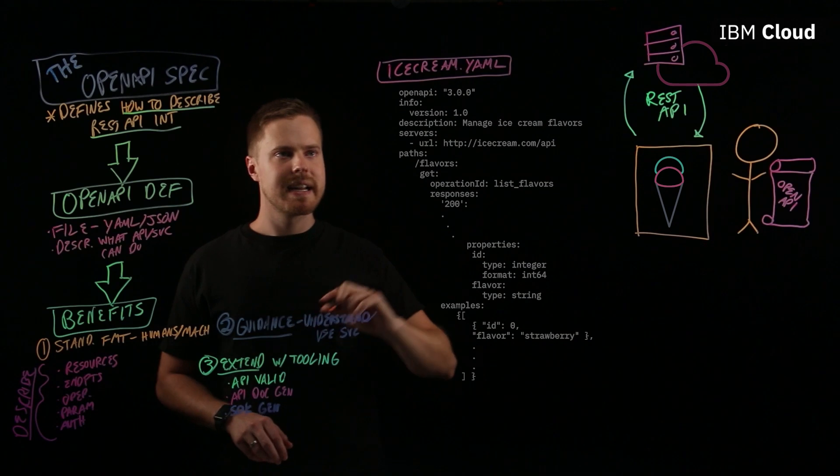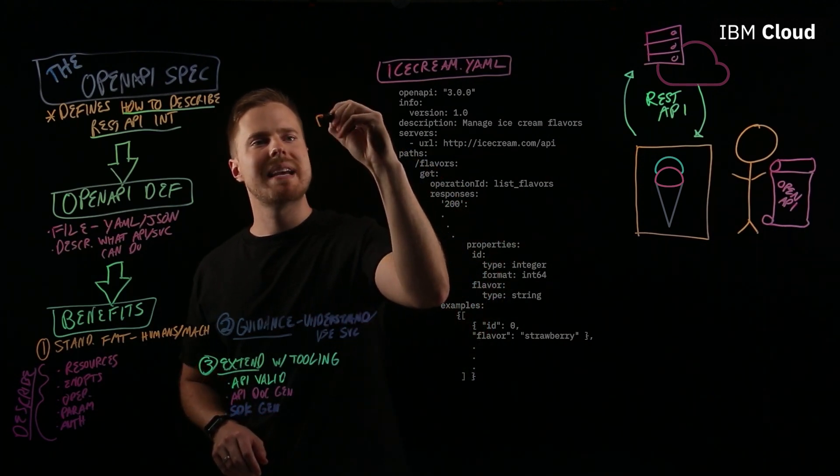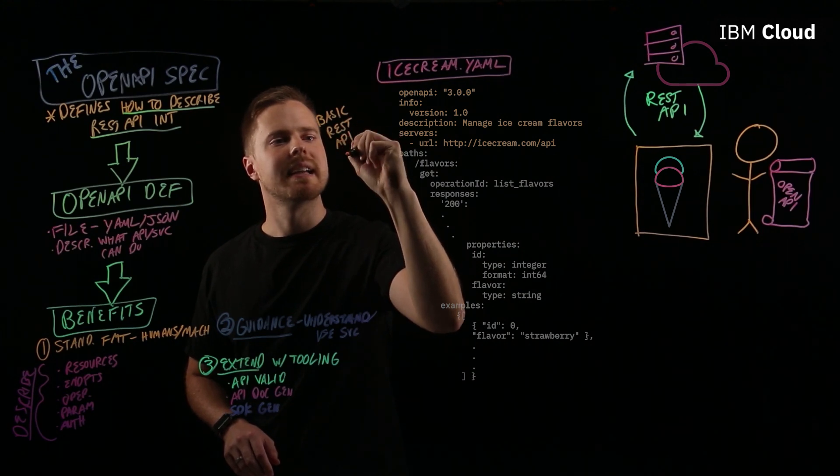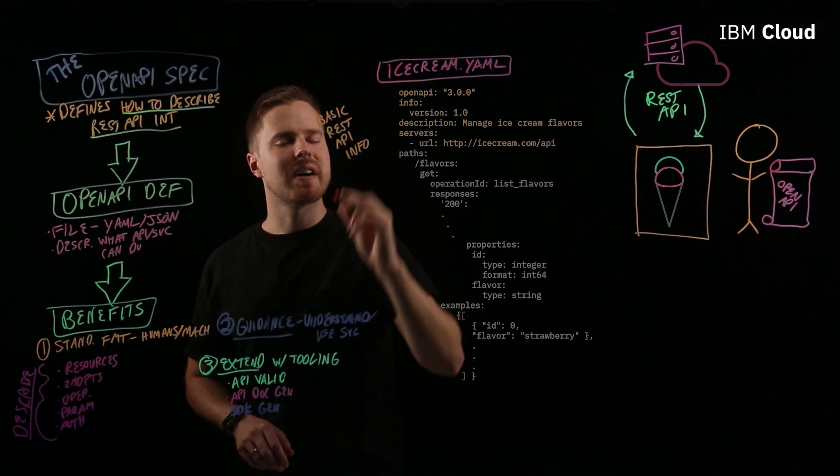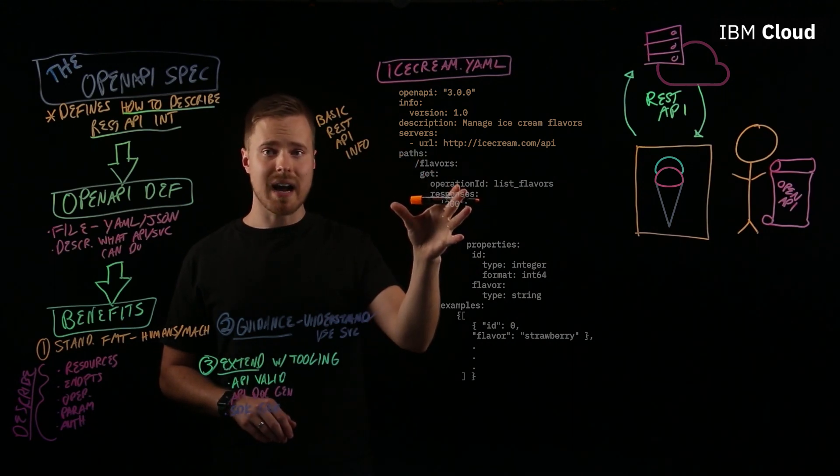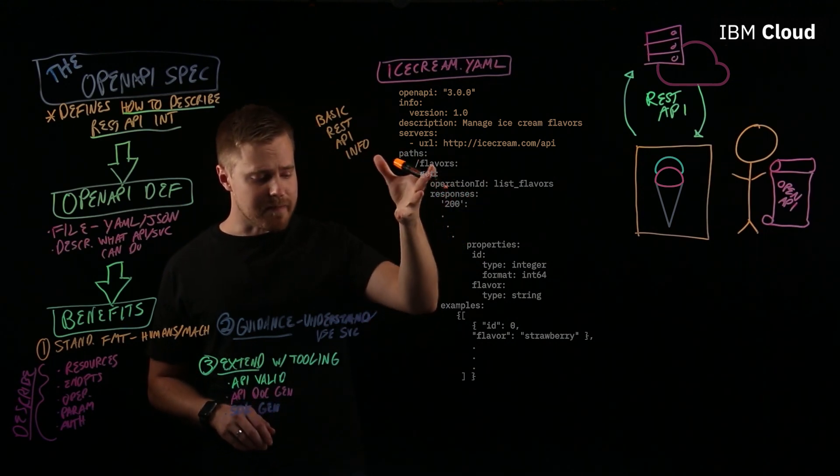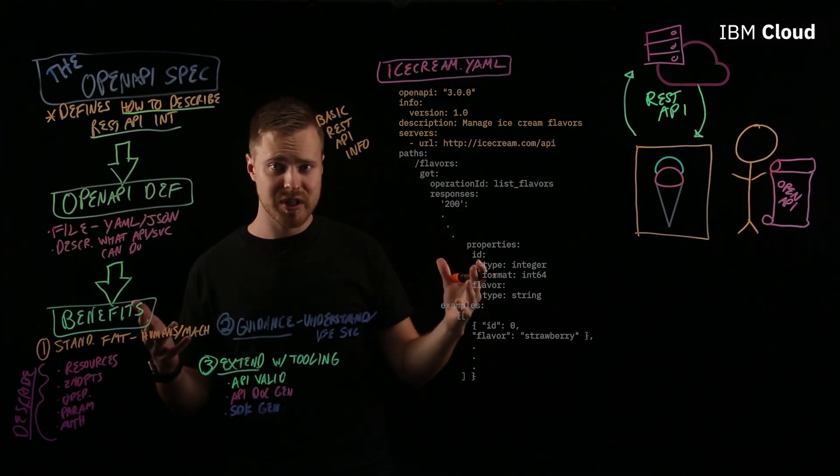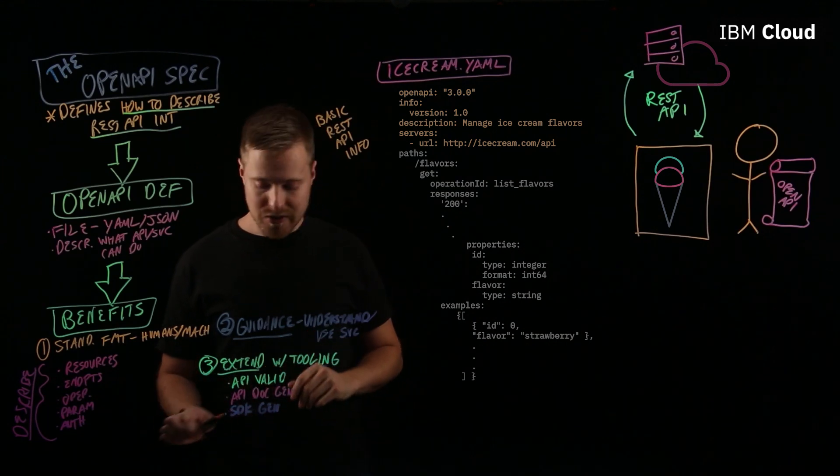And let's take a look at an example of what part of this file might look like. At the beginning, you have some basic REST API info. You might have a version of OpenAPI that's being used, some version of this REST API itself, maybe a description. All that can go towards the top of this file.